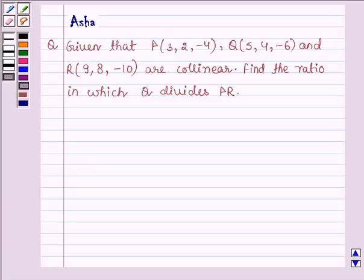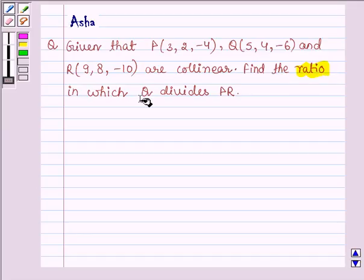Hello and welcome to the session. The question says, given that P(3, 2, -4), Q(5, 4, -6), and R(9, 8, -10) are collinear, find the ratio in which Q divides PR.